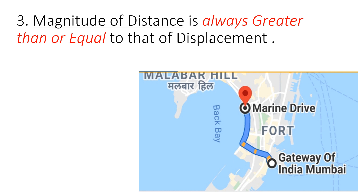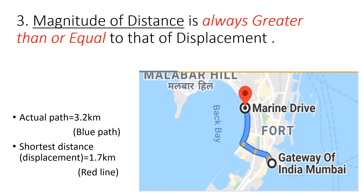The magnitude of distance is always greater than or equal to that of displacement. Look at the first condition — always greater. Here on the map, Marine Drive to Gateway of India's actual path is 3.2 km, shown in blue. Whereas the shortest distance is 1.7 km only, shown with the red line.